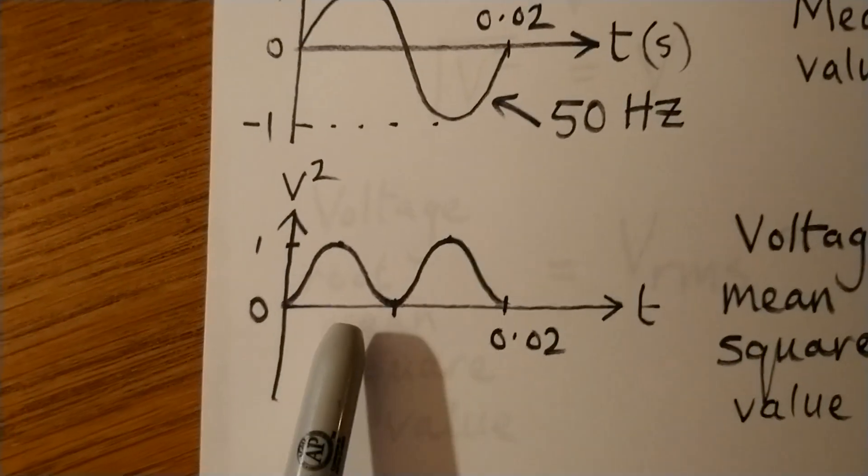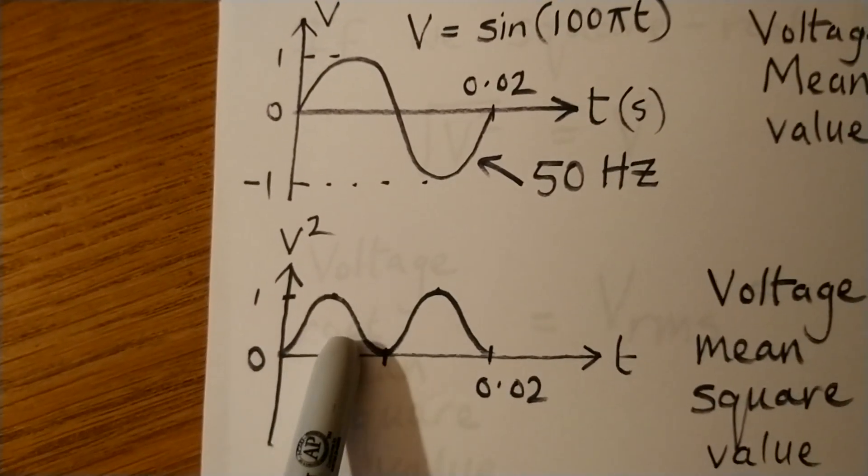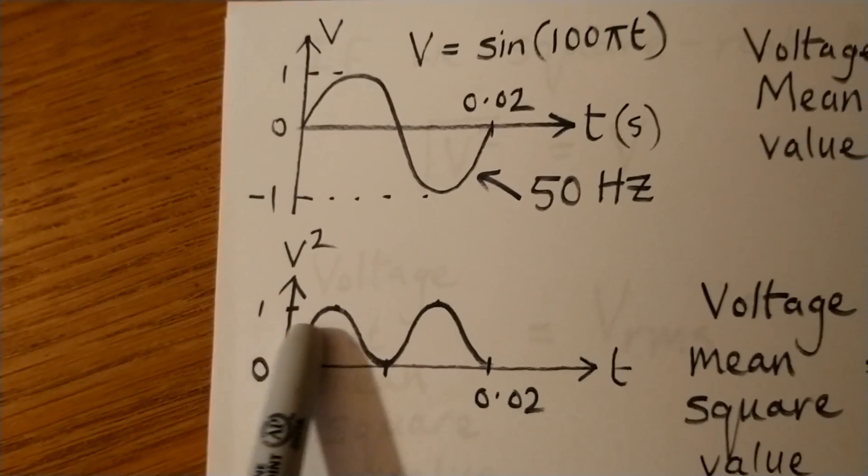Well, what we do is we square the top graph and that gives us something like this. So now all of our values are positive.